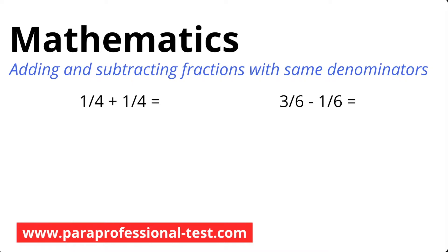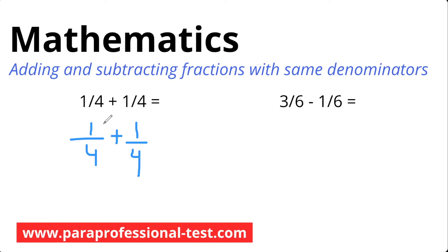Let's use the simple 3-step process. Step 1: the bottom numbers are already the same, so we go straight to step 2. In step 2, we add the top numbers and put the number over the same denominator. Sometimes it helps to rewrite fractions to see them better. Here, I have 1 over 4 plus another 1 over 4. Step 2 says to add the top numbers — 1 and 1 — and put them over the same denominator. So 1 plus 1 is 2, put it over the same denominator, which is 4.